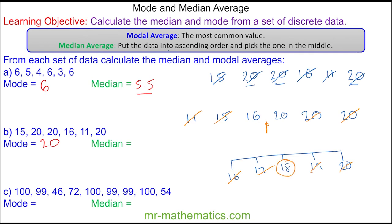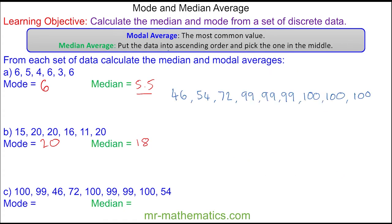For question C, you can see now there are three 99s and three 100s, so this would be called bimodal. Bimodal means it has two modes, which in this case are 99 and 100. To work out the median again, we'll cross off the smallest and the biggest, and you can see the one in the middle is 99.